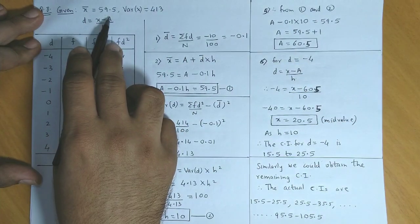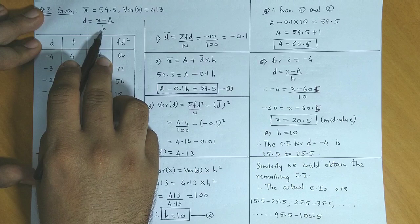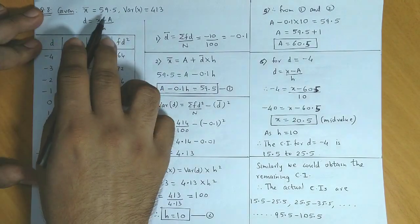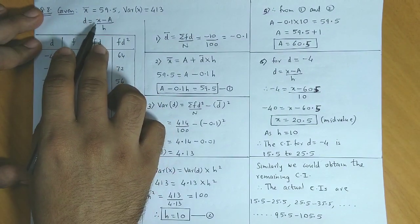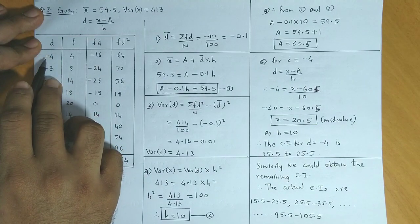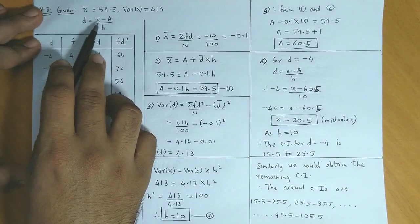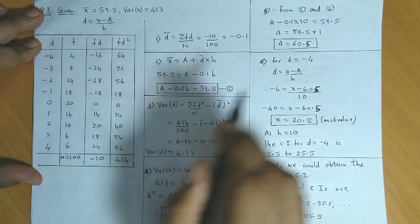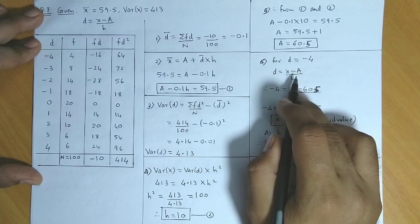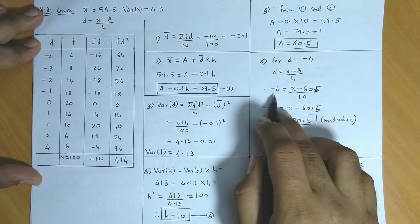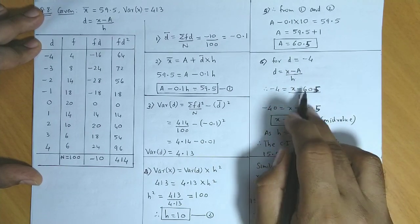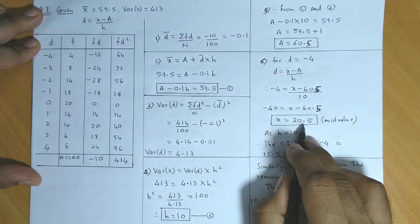So we've obtained the value of a and h. Here d's values are given. From d, a, and h, we can find the mid value x. First, we take d's value as minus 4. At d equals minus 4, since d is x minus a upon h, if we consider d as minus 4, a is 60.5, h is 10, and if we simplify this, we get the first mid value as 20.5.